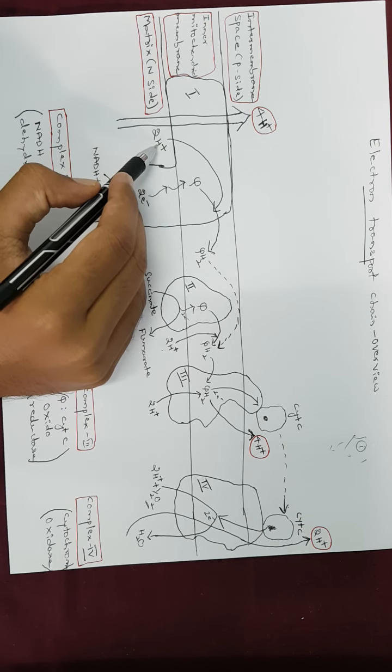Coming on to complex two — complex two is called succinate dehydrogenase. It is one of the Krebs cycle enzymes and is membrane bound. Complex two, also called succinate dehydrogenase, converts succinate into fumarate, and in this conversion two electrons are released. These two electrons are transferred through the series of electron carriers present in complex two and ultimately transferred to ubiquinone. Ubiquinone takes up those two electrons and two protons from the matrix and is reduced into ubiquinol or QH2.